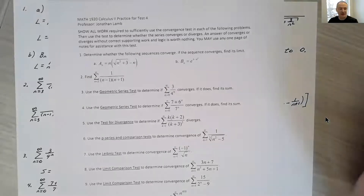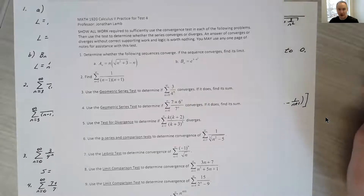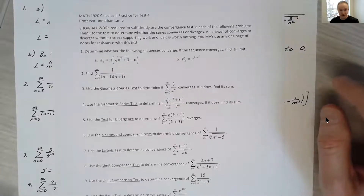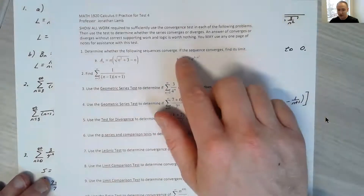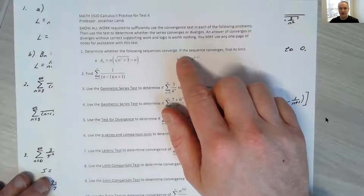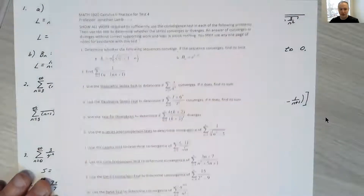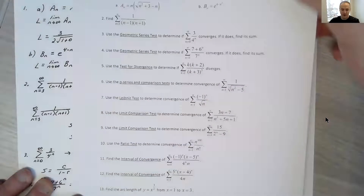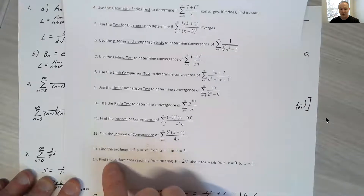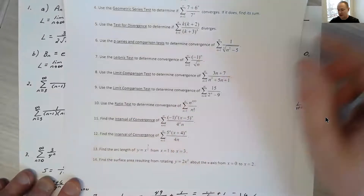Hi, all. Let's take a look at your practice test covering sections from Chapter 8 and Chapter 10 up through 10.6. Your first problem is going to be different from Problems 2 through 12. The first problem is on sequences, not series — they follow different rules. Problems 2 through 12 will be our Chapter 10.2 through 10.6 series problems, and the last two problems go back to Chapter 8 with arc length and surface area.